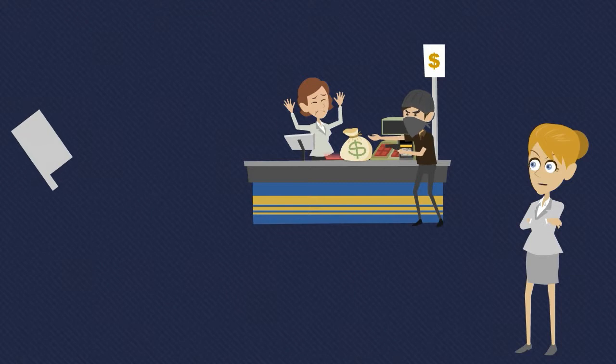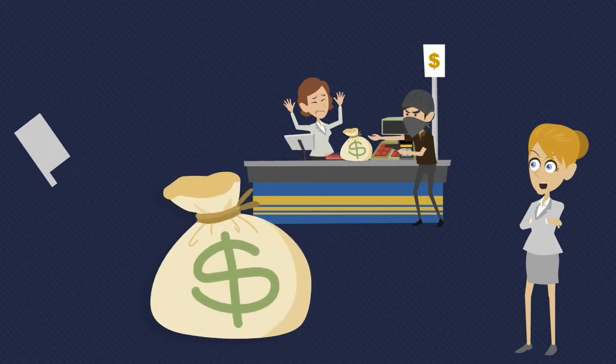During a robbery, all the teller needs to do is remove the disguised tracker from the cash drawer and place it with the other cash. That's it.